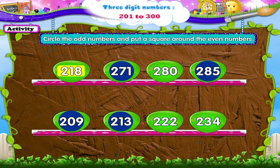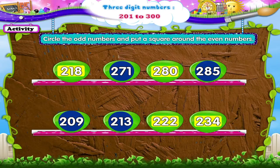The remaining numbers 280, 222, and 234 are even numbers. Put a square around them. Are the numbers from 201 to 300 clear to you? Good! We will learn more numbers later.